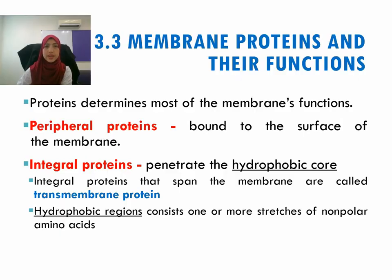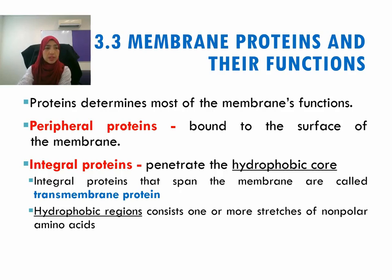Let's continue with 3.3 membrane proteins and their functions. The fluid mosaic model describes the membrane as a collage of different proteins, and different types of cells contain different sets of membrane proteins. Each cell has a unique collection of proteins. We have peripheral proteins, which are not embedded in the membrane and are loosely bound to the surface, and integral proteins, which penetrate the hydrophobic core. Integral proteins that span the membrane are called transmembrane proteins.